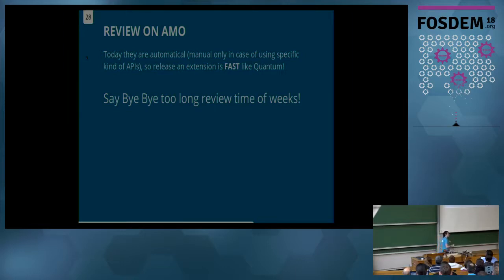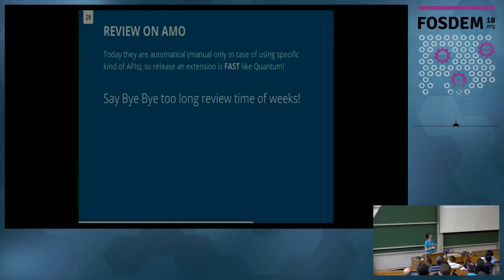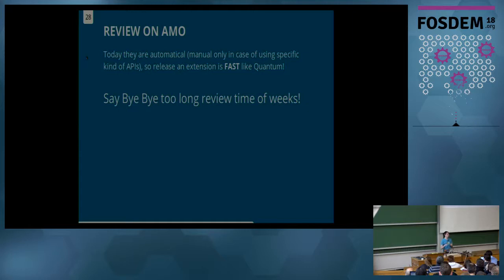Another point from last year was the review on AMO, because it was manual. So when we had to release a new version — even a bug fix — we had to wait for someone to review the code. It required a lot of time, which in web development is not acceptable. Now, it's automatic. For a specific kind of API it's manual again, but it's very fast to release a new version. One of the problems with Chrome is that it's automatic but they don't care about strict code or policy. In Mozilla's AMO, you get a lot of warnings about what your code is doing wrong — so it's helpful for developers to improve their code.